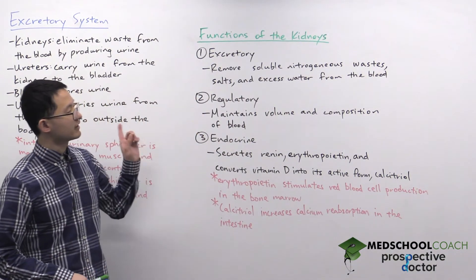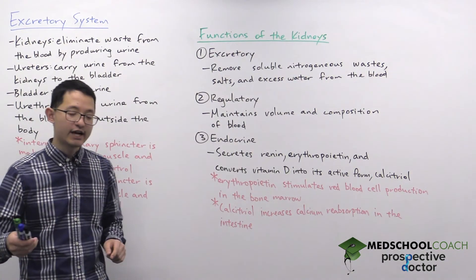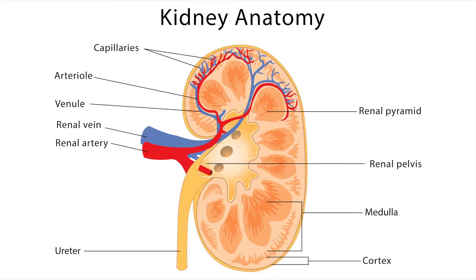Now let's look a bit at the kidneys. In this diagram you can see a bit more detail on the anatomy of the kidney. The kidneys receive blood supply from the renal artery, and blood that passes through the kidney is then returned to the body through the renal vein. The outer layer of the kidney is called the renal cortex, and the inner part is called the renal medulla.